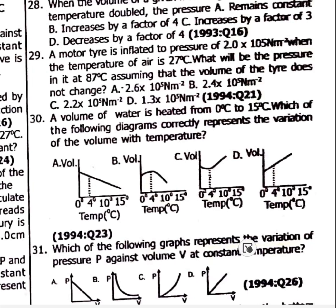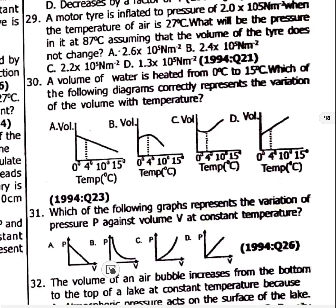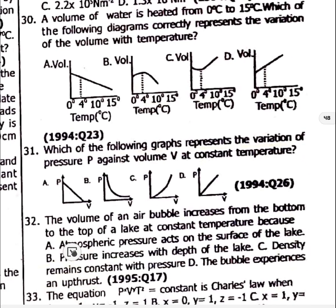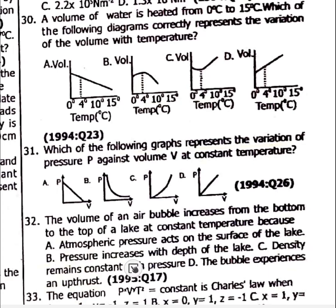Question 31: Which graph represents the variation of pressure P against volume V at constant temperature? Question 31 is option B. Question 32: The volume of an air bubble increases from the bottom to the top of a lake at constant temperature because pressure increases with the depth of the lake — option B.